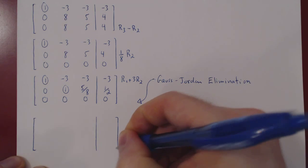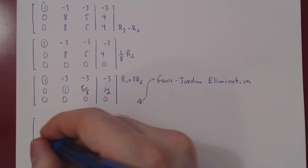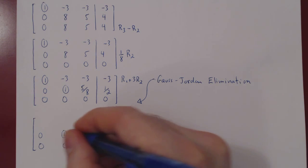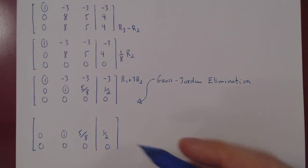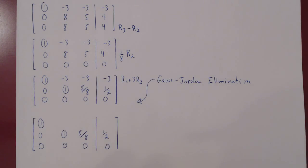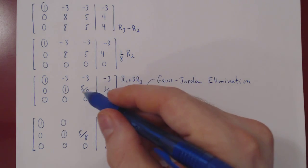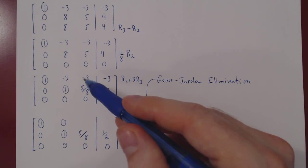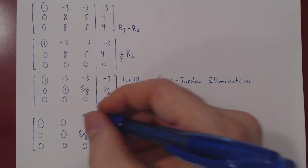We can recopy the bottom two rows, as we're not changing them. And now we apply the row operation. 1 minus 0, 1. Now, negative 3 plus 3, 0. Now, negative 3 plus 3 times 5 over 8, that's plus 15 over 8. But negative 3 is negative 24 over 8. Negative 24 plus 9, negative 19.